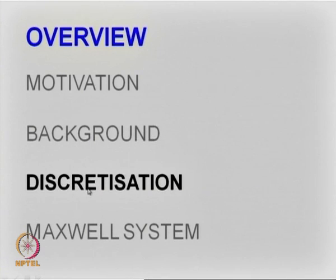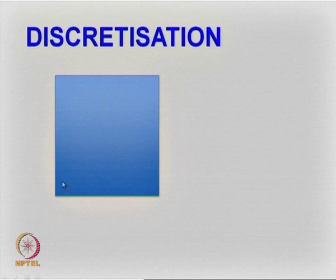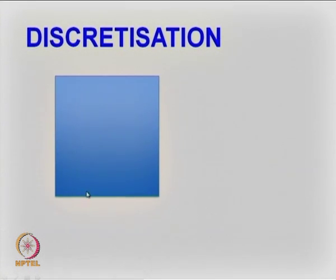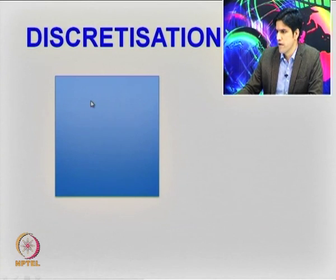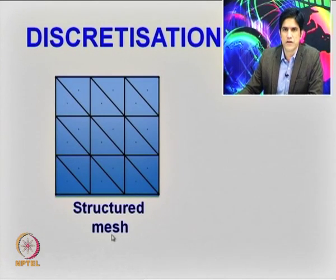We will come back to temporal discretization in later lessons. What we have is a domain represented by, let's say, a square — though it need not be a square; it could be any random shape. You can discretize this using standard squares as in the finite difference method, which also requires a dual mesh. In the finite element case you can have a structured mesh.